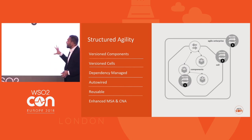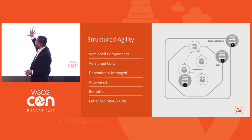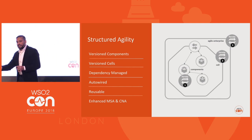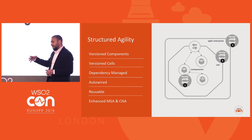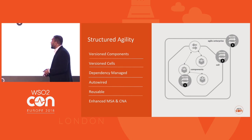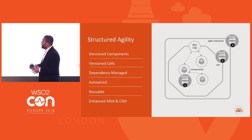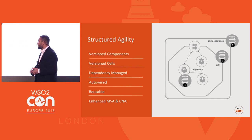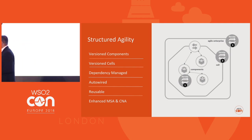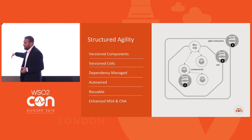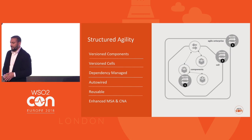We call this concept 'structured agility.' There are now three levels of agility: at the component level you can change and improve it continuously; at the cell level you can improve and release cells; and at the system level you can improve and release the whole system. Agility comes with versioning of components and cells, and it helps with dependency management. You don't need to wire things manually — the control planes do the auto-wiring. It also provides reusability through a concept called a cell registry, where you can pull a cell like a library and reuse it. This is essentially enhancing microservices and cloud-native architecture by bringing these concepts into the picture.